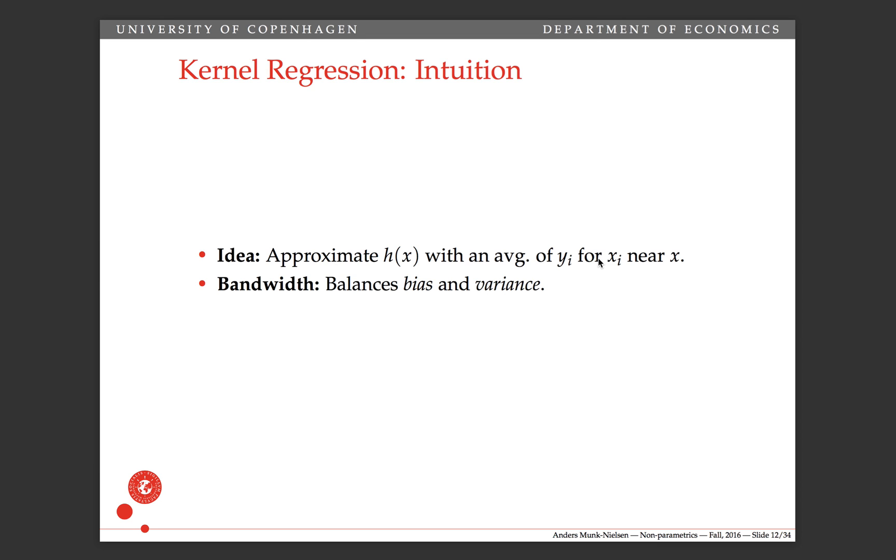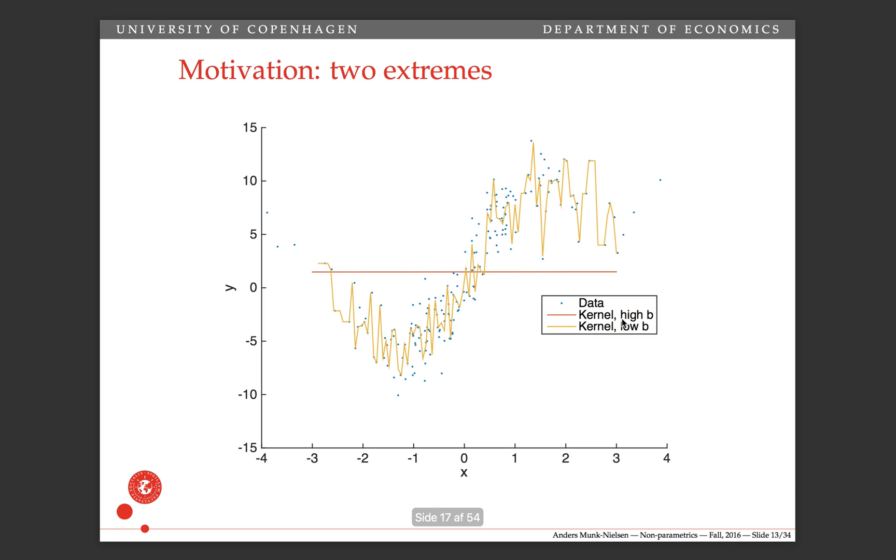Then there's a bandwidth which controls how quickly we remove the weight. So we use a weighted average of the y's, and the weight is falling in the distance between xi and x. This weight is called the bandwidth and it balances the bias and the variance. Here we have two versions of the kernel regression estimator. As you can see, the red one has way too high bandwidth, it's underfitting. There's a lot of bias in this region: it's systematically over, and in this region systematically under the true line. Here you have this golden line, and you can see that it has way too low bandwidth. It's overfitting the data; it almost goes through every single point which is not what we want. That's fitting the noise in the data more than it's fitting the underlying signal.